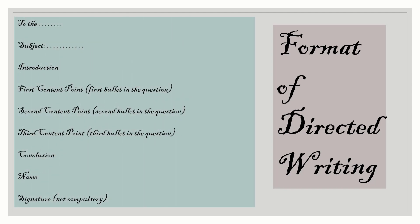You've noticed that in the question the examiner has given us the hint to start the report with 'To the Principal.' This is how we are going to begin our report. The first thing we write is 'To' — whoever we are addressing, in this case the Principal. Then we write the subject. Here, since we are talking about improvement in facilities for newcomers, the subject should be short and to the point.